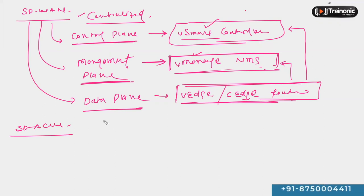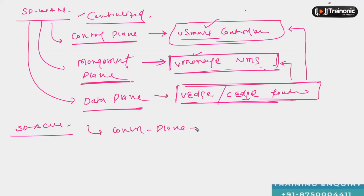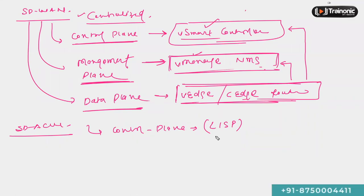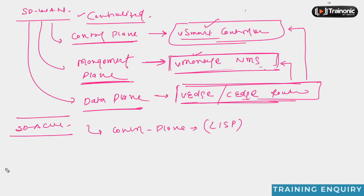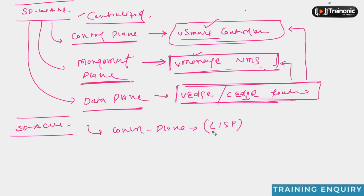When we talk about SD-Access, the control plane functionality is based on a protocol called LISP — Locator/ID Separation Protocol. We'll discuss whether the control plane in SDA is truly centralized or still somewhat decentralized when we cover LISP in detail. Similar to how vSmart is a centralized controller in SD-WAN and vManage is a centralized management controller, in SD-Access the control plane is centralized using LISP.